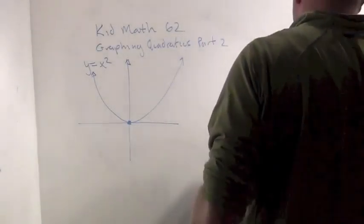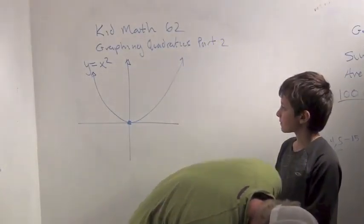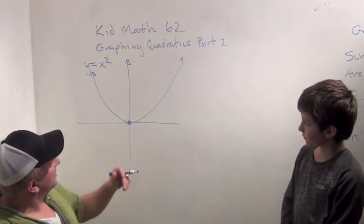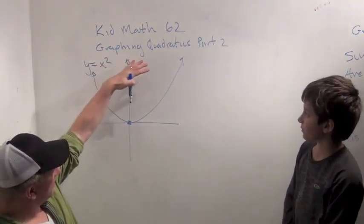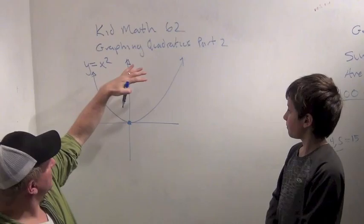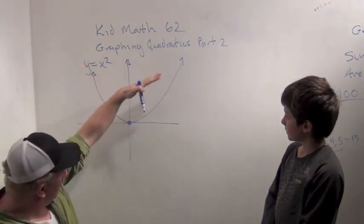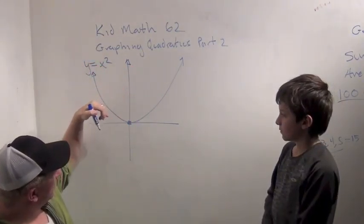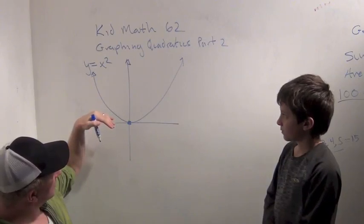Okay, good morning. Welcome to Kid Math number 62. That graph here, as I look at it, isn't so great, but that's alright. We're going to talk about graphing quadratics again today. So here I've drawn a graph of y equals x squared, admittedly not the best graph of y equals x squared.